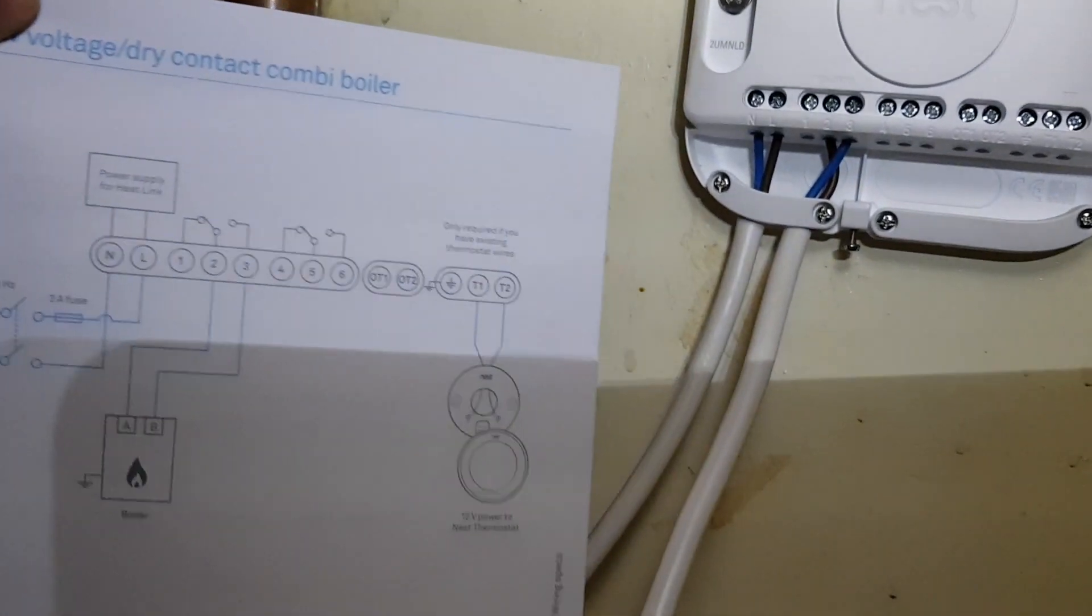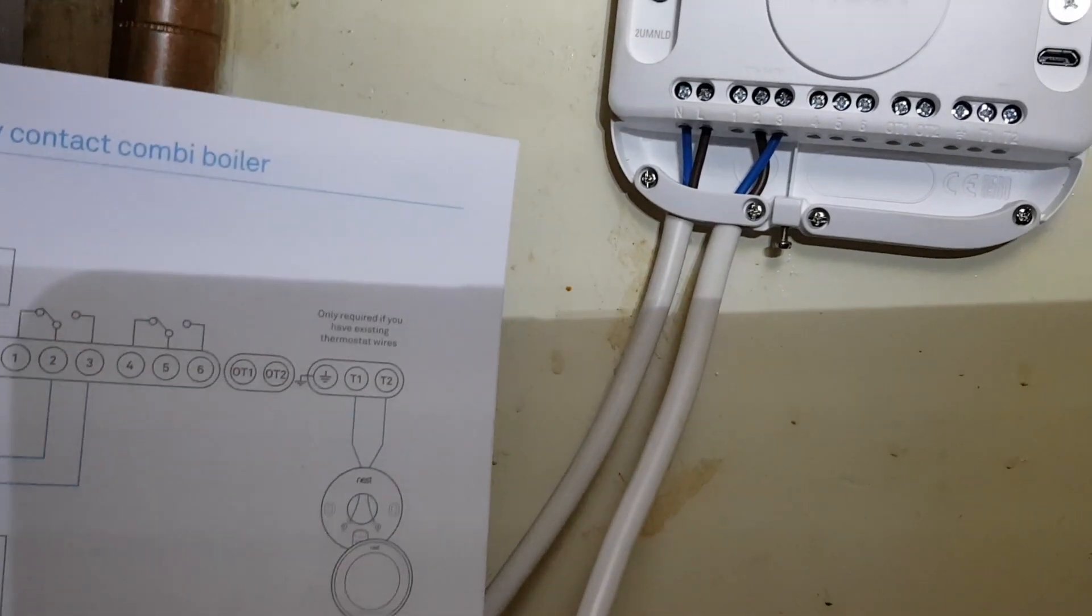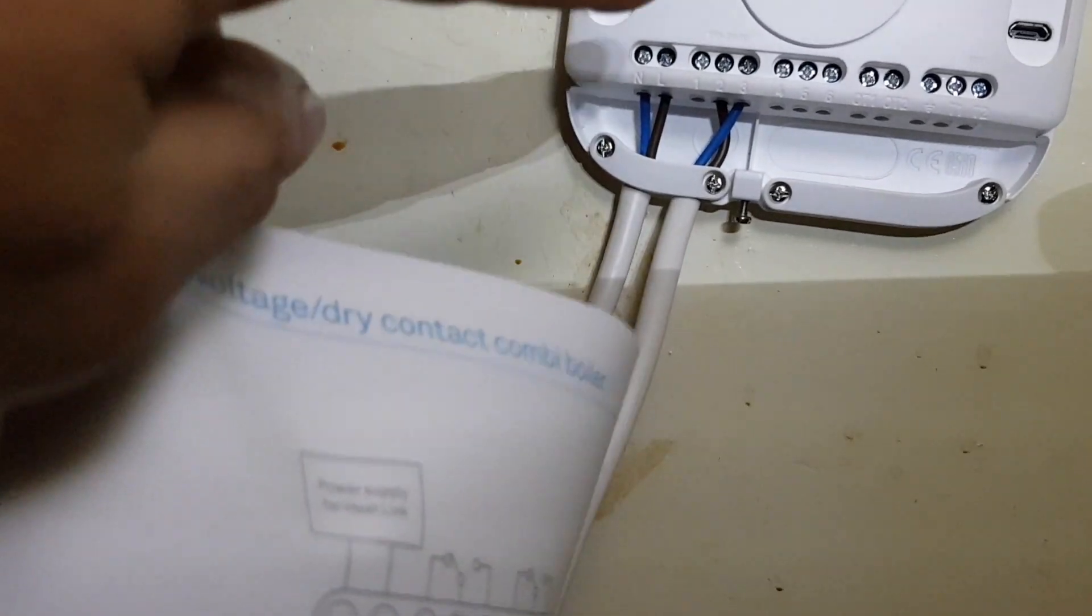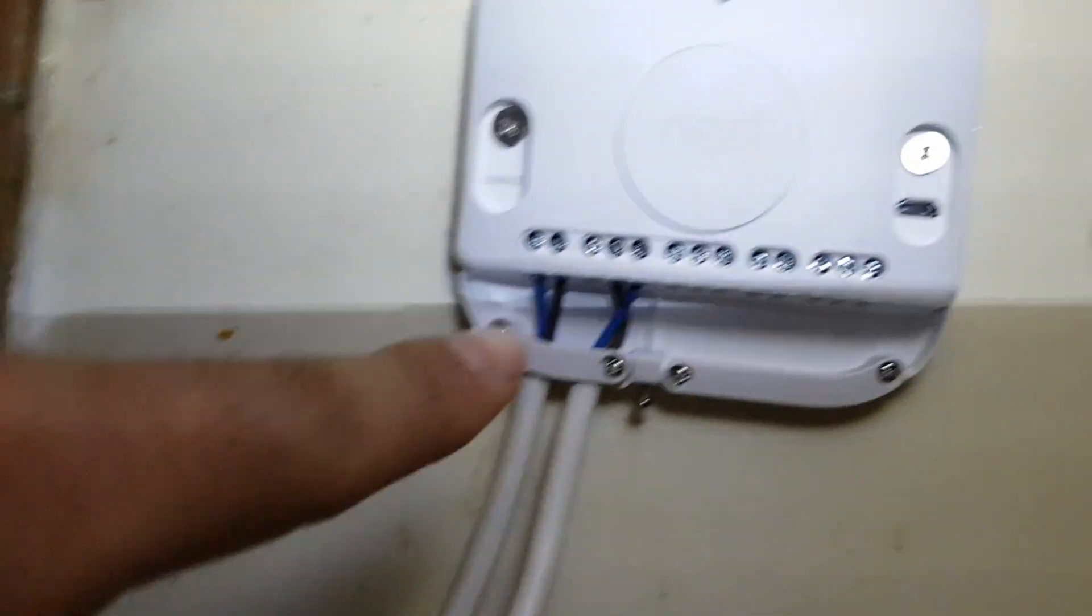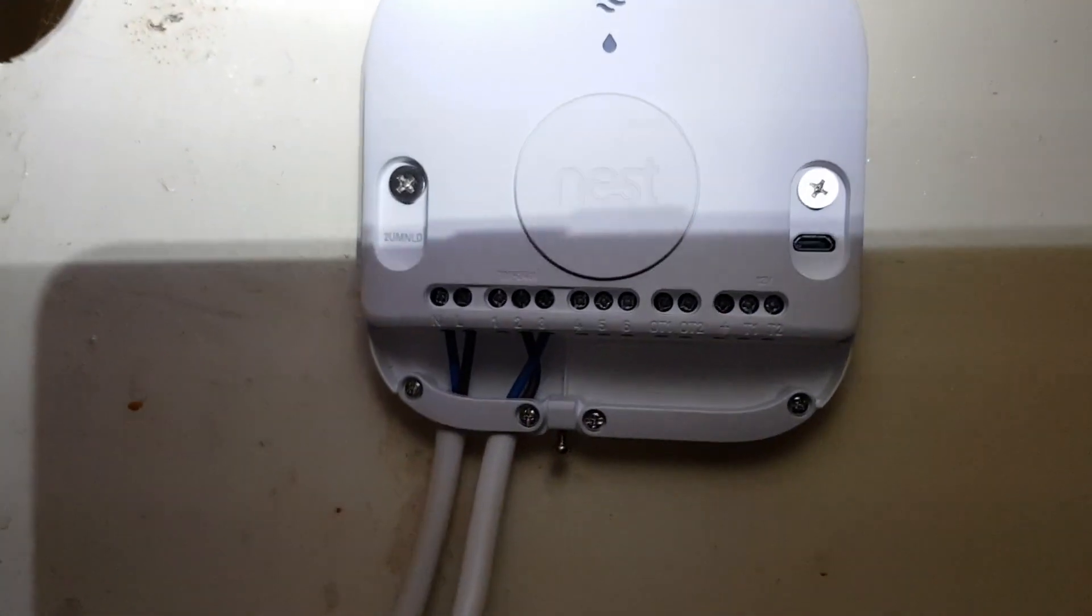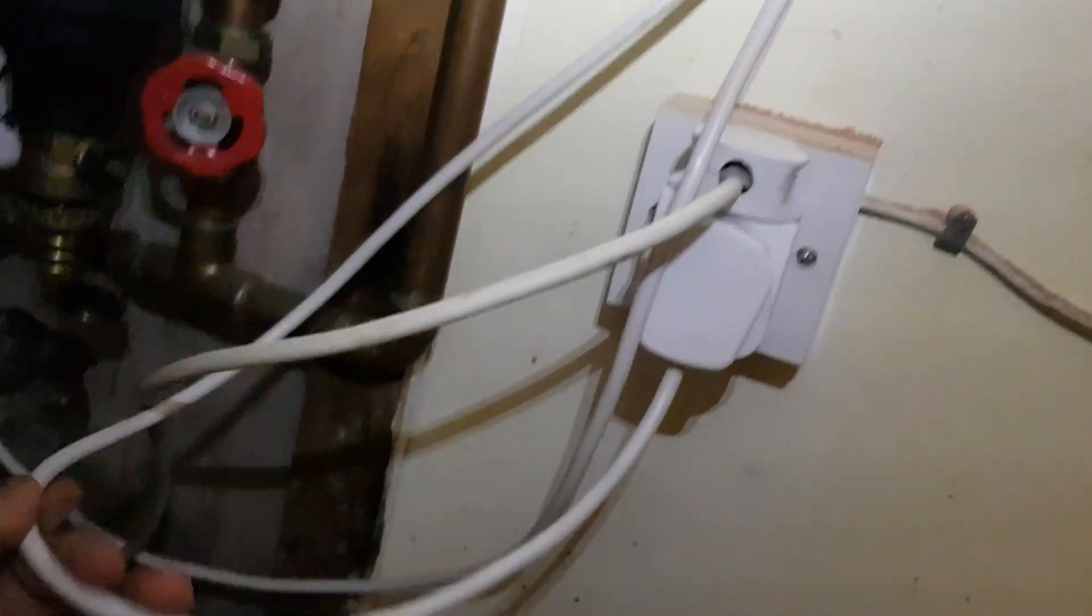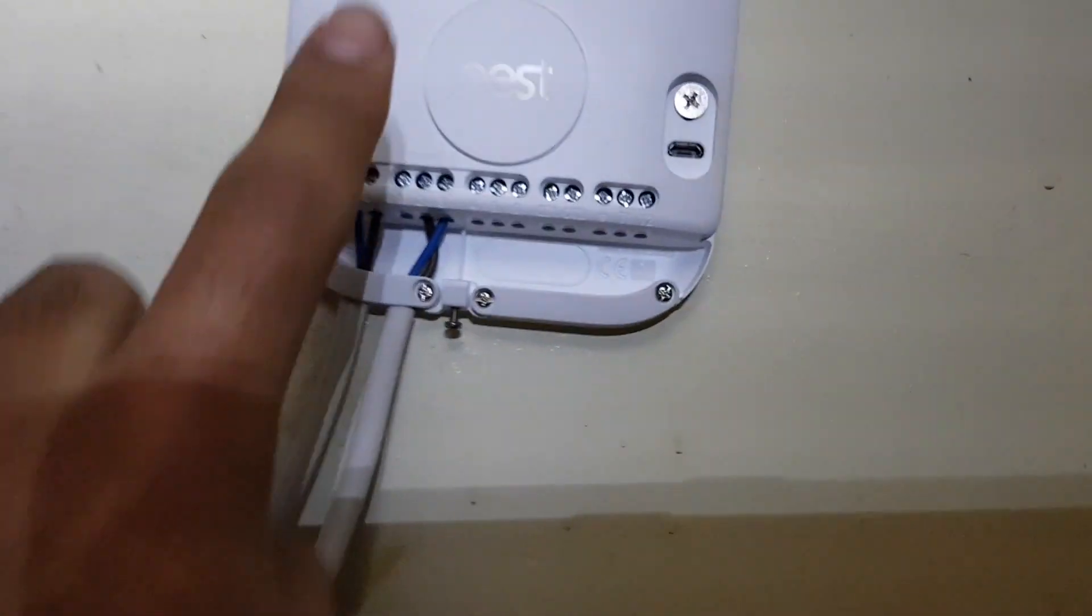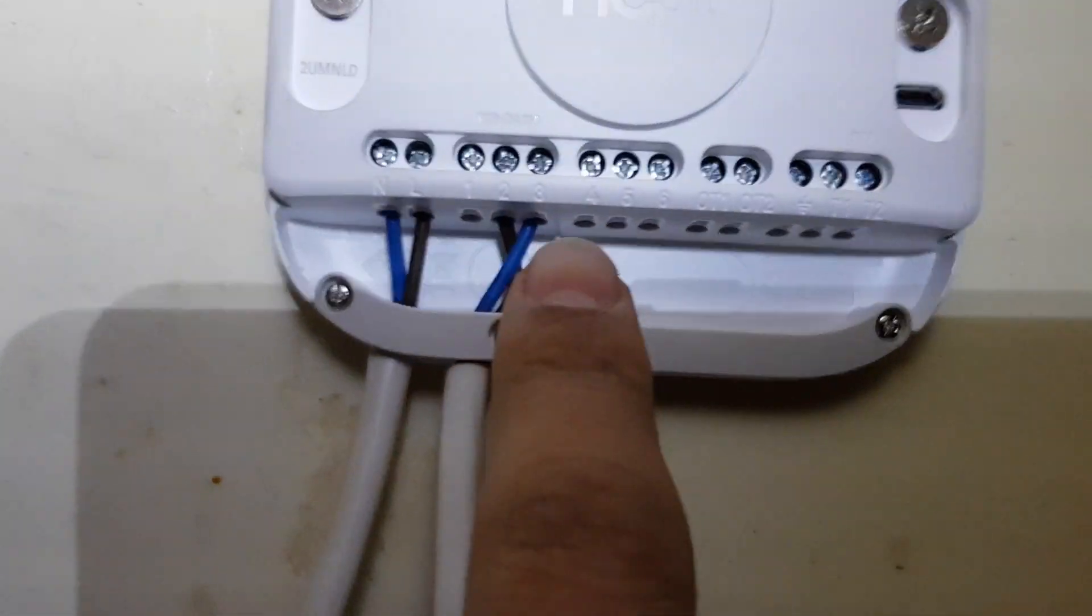If you look there, the first wire on your left is the power supply neutral and live coming to your Nest heat link. That cable, this cable here, supplies the power to the heat link. These two cables connected at 0.23 are the controller cables which are coming up from there and connected to these two points.